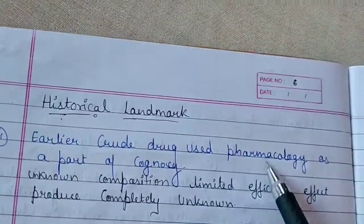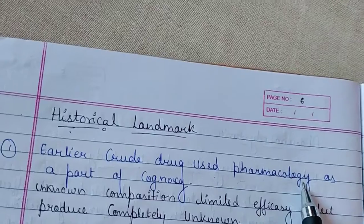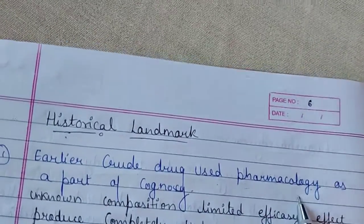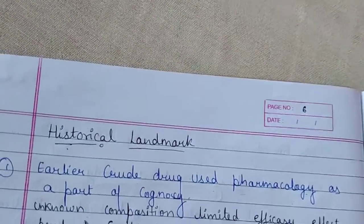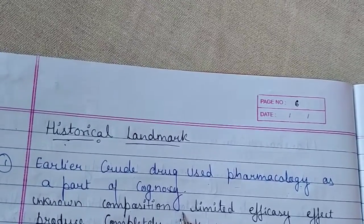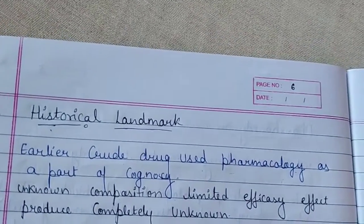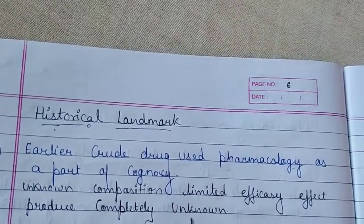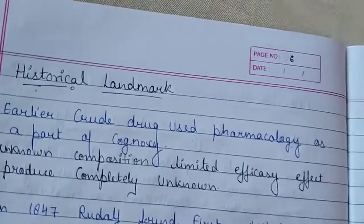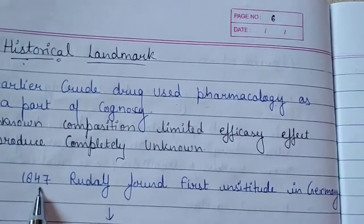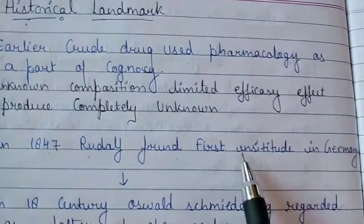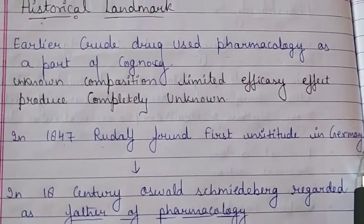Regarding historical landmarks, earlier drugs used in pharmacology were part of cognoscopy — with unknown composition, limited efficacy, and completely unknown effects. In 1847, Rudolf Buchheim founded the first pharmacology institute in Germany.